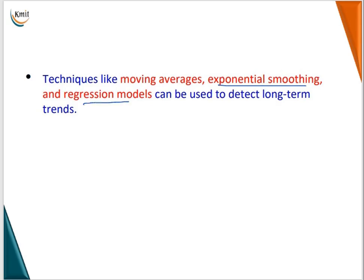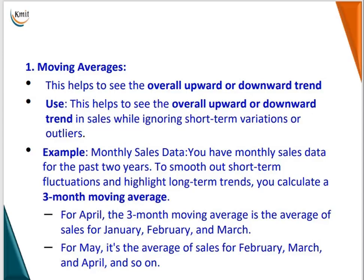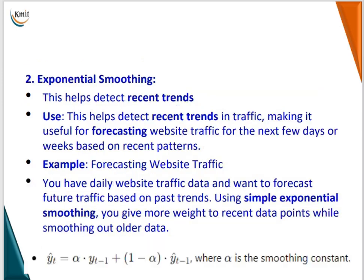Techniques like moving average, exponential smoothing, and regression models can be used to detect long-term trends. Moving average helps detect an overall upward or downward trend. For example, to smooth monthly sales data, we calculate a 3-month average: for April, the average is of January, February, and March; for May, the average is of February, March, and April; and so on. By doing this, we smooth the graph.